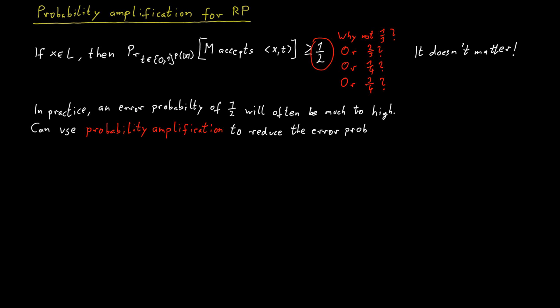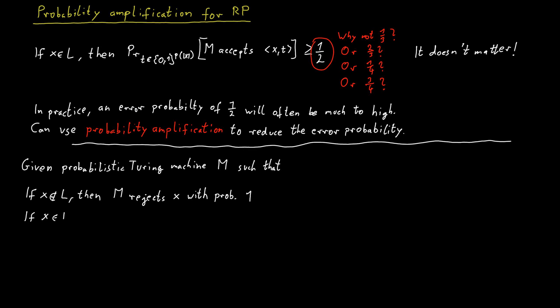And what we are now going to discuss is a trick on how you can achieve this. And this is known as probability amplification. Let's say we have a probabilistic Turing machine that rejects words that are not in the language for sure, and it accepts words that are in the language with probability at least one-half. How could we turn such a probabilistic Turing machine with these properties into one that still rejects every word that is not in the language, but accepts words that are in the language with a much larger probability?